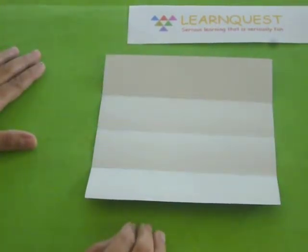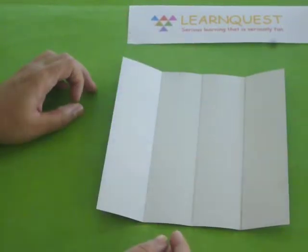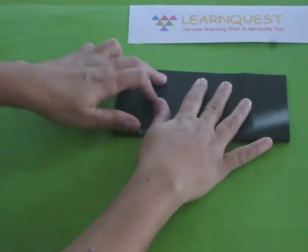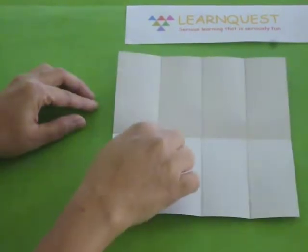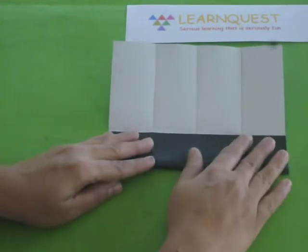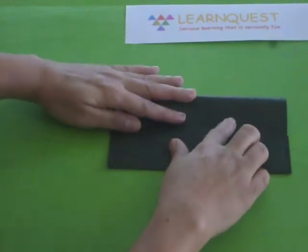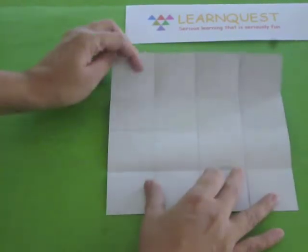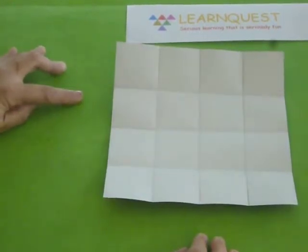This is how your paper will look. It has been divided into 4 equal parts. Now turn the paper and again divide it into 4 equal parts. Fold the bottom to meet the top. Make sure that all the sides coincide. Open it. Now make the bottom meet the center line and the top meet the center line. So now we have divided our paper into 16 equal parts.